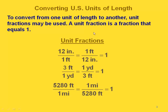Now if we want to convert from one unit of length to another, we're going to use something called a unit fraction. A unit fraction is a fraction that equals one. For example, 12 inches over one foot — since these two are equal, we can write this fraction in either direction and it would equal one. So both of these would be unit fractions.